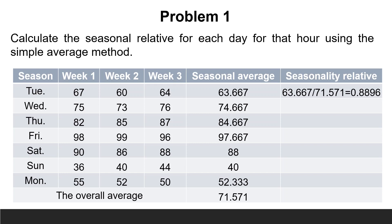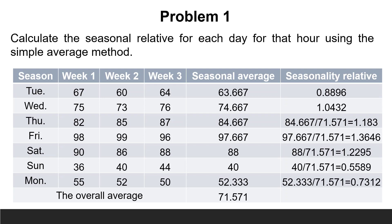The seasonality relative of Tuesday is 63.667 divided by 71.571, equals 0.8896. The seasonality of Wednesday is 74.667 divided by 71.571, equal 1.0432. Continue in the same way to find the seasonality relative for all days.